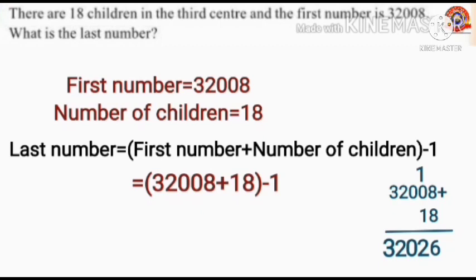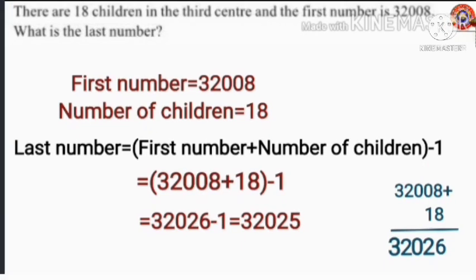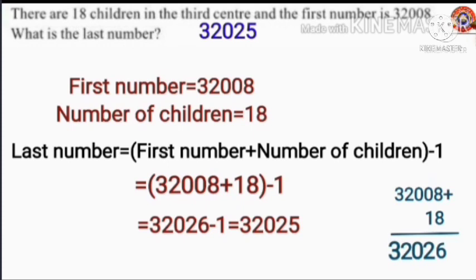Then subtract 1 from this number: 32,026 minus 1, which equals 32,025. So the last number is 32,025.